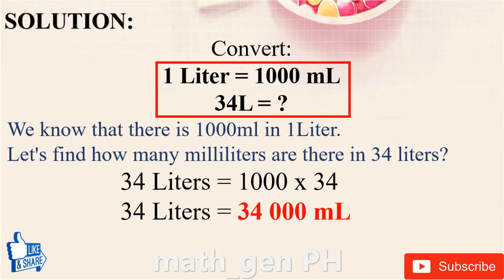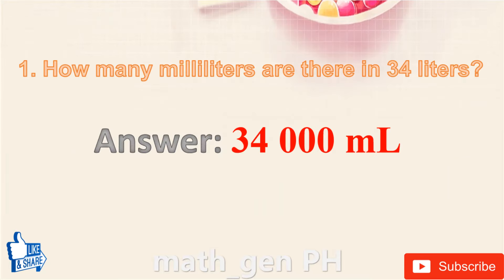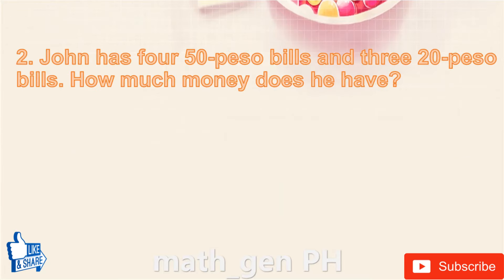Solution: Convert — 1 liter is equal to 1,000 milliliters. To find how many milliliters are in 34 liters: 34 liters × 1,000 = 34,000. In 34 liters, there are 34,000 milliliters. Answer: 34,000 milliliters.